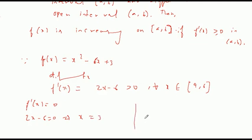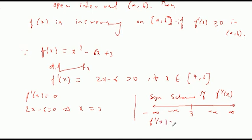So 3 is the critical point. Using the sign scheme of f'(x) from minus infinity to plus infinity, we see that f'(x) is greater than 0 when x is greater than 3. Therefore, f(x) is increasing on interval [4, 6].